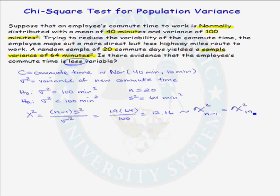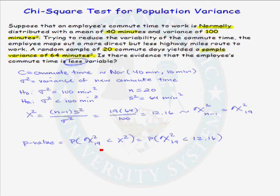We are now ready to calculate the p-value for the problem. The p-value is the probability that a chi-squared random variable with 19 degrees of freedom is less than our test statistic of 12.16. To find this p-value, we need to go to a chi-squared distribution table.